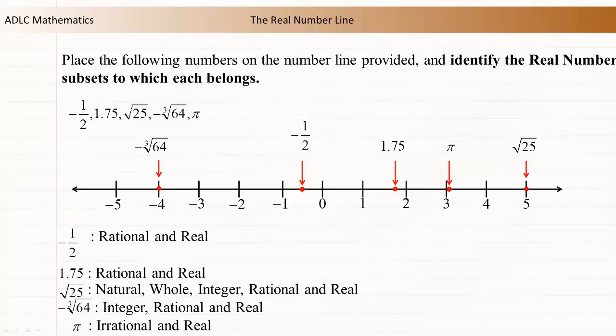Pi is an irrational number because it does not terminate and it does not repeat. It is also part of the real numbers system.